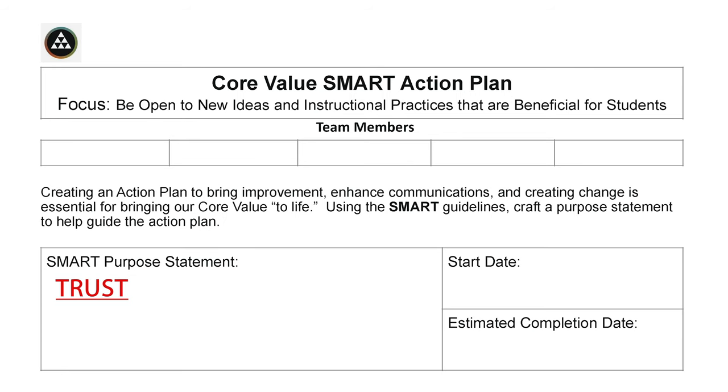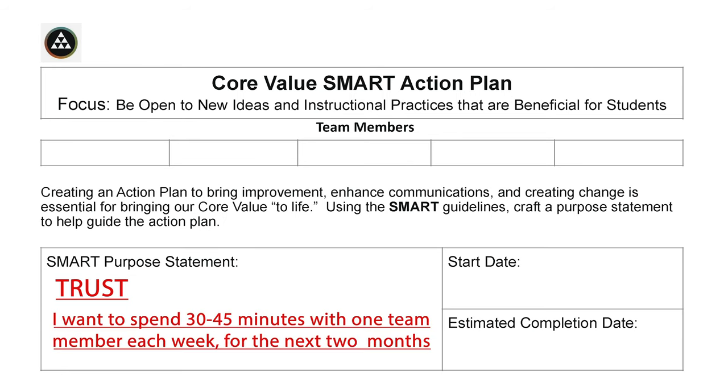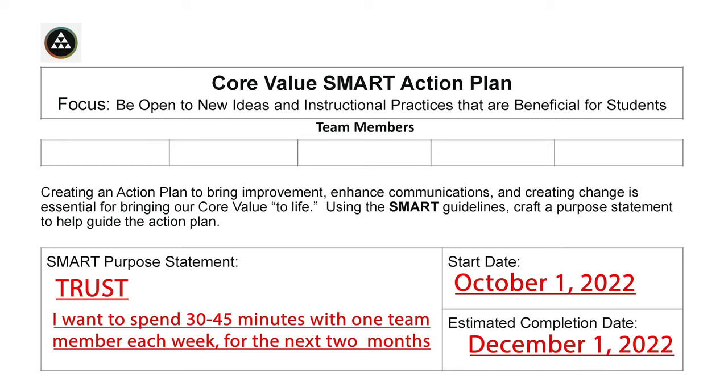If you're intentional about a SMART goal, one could be that I want to spend at least 30 to 45 minutes with one team member each week for the next two months. And when you look at the SMART goal acronym, that's something that's very specific, it's measurable, it's attainable, realistic, and most importantly, we bound it with time.